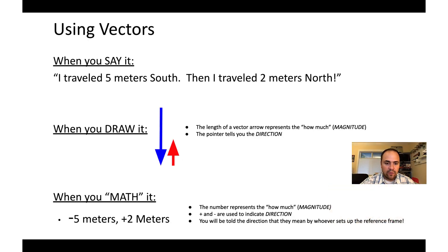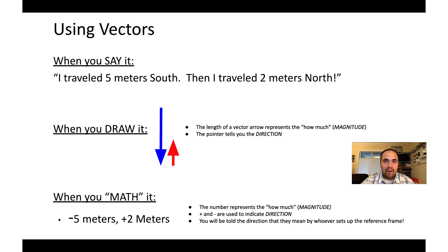When we use vectors, we could simply state them — for example, I traveled five meters south and then two meters north. If you want to draw them, you would use arrows. Arrows point in a particular direction, giving us the directional component. The length of the arrow tells us the magnitude — a longer arrow has a greater magnitude and a shorter arrow has a lesser magnitude. Five meters south is represented by the blue arrow pointing downward, and two meters north is the shorter red arrow pointing upward in the opposite direction.